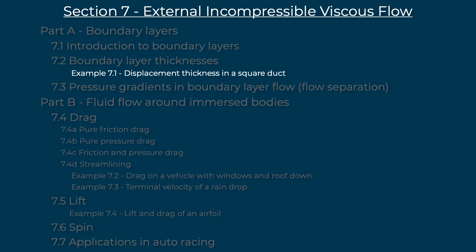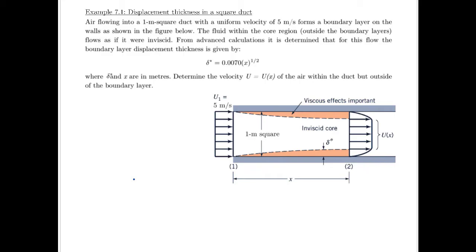Okay, so in this video I'll be solving example 7.1, where we look at the displacement thickness of a boundary layer in a square duct. In this example, you should focus on using it as a demonstration of the principles that we've seen from video 19. That's really what its value is here. So this is just a simple example that's a bit of plug and chug to show what's going on.